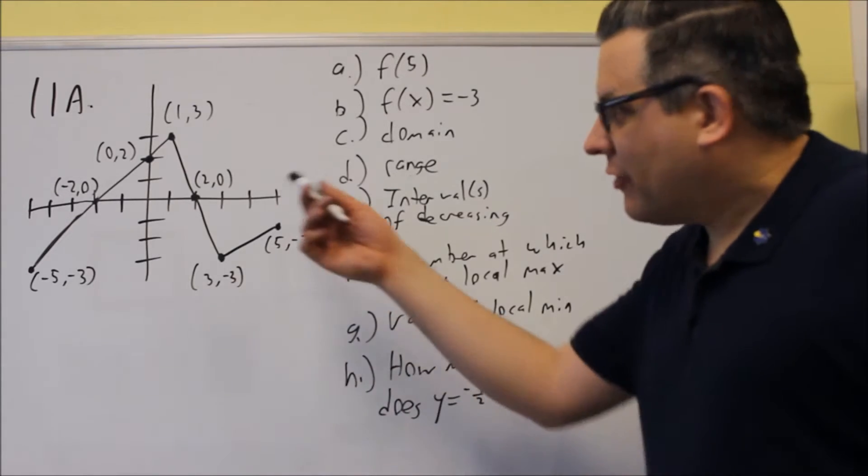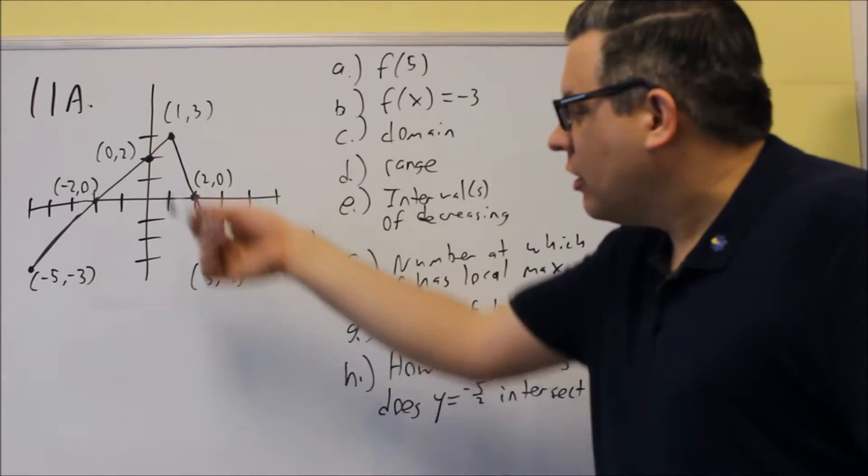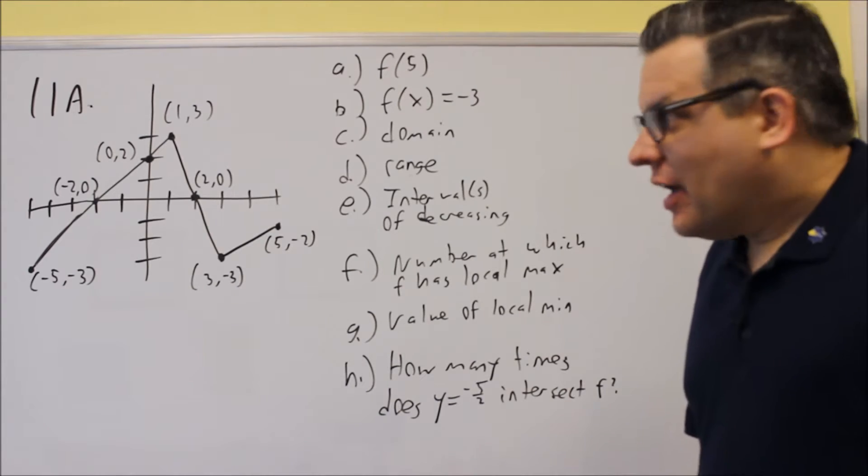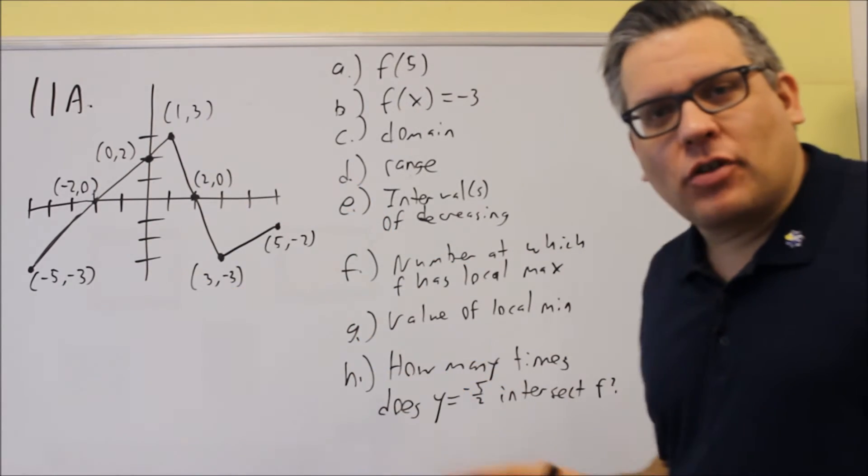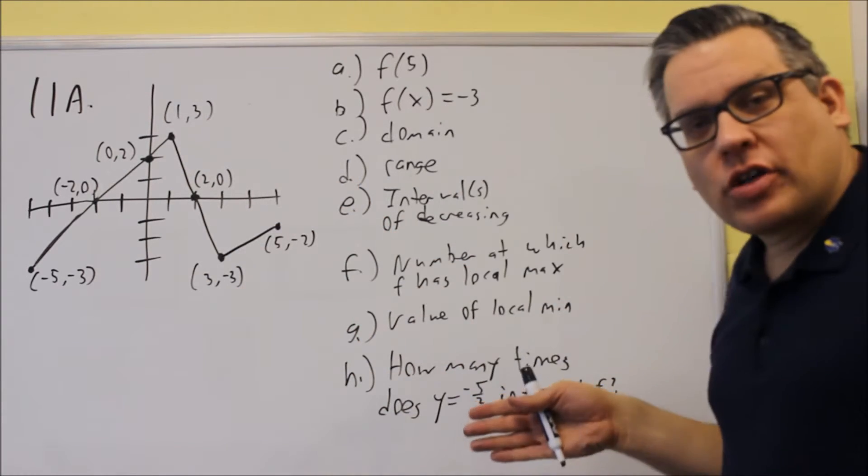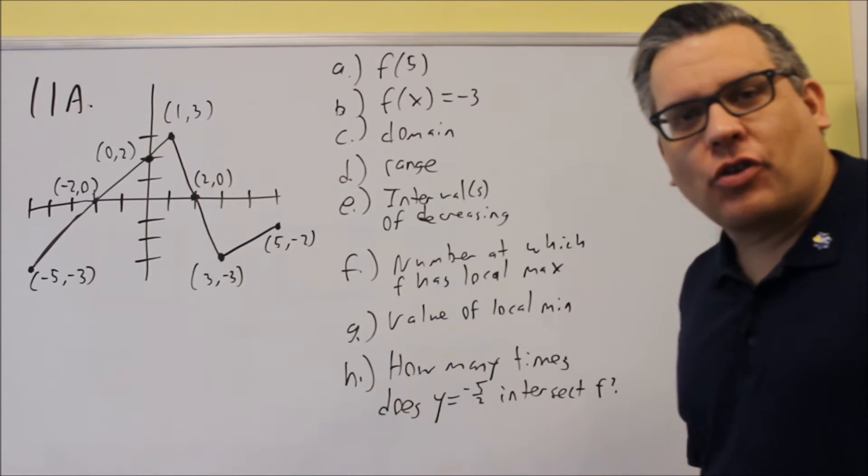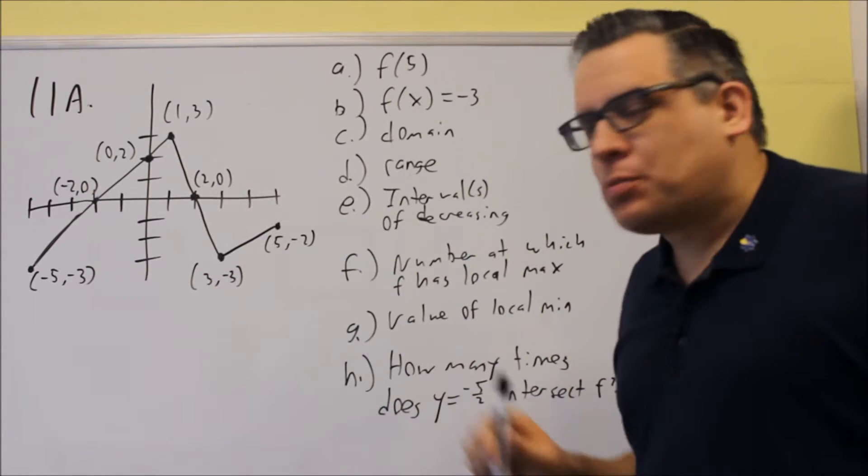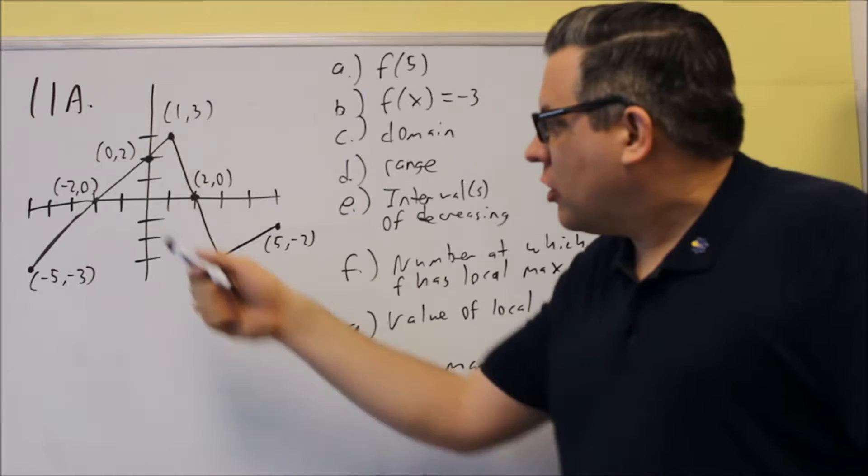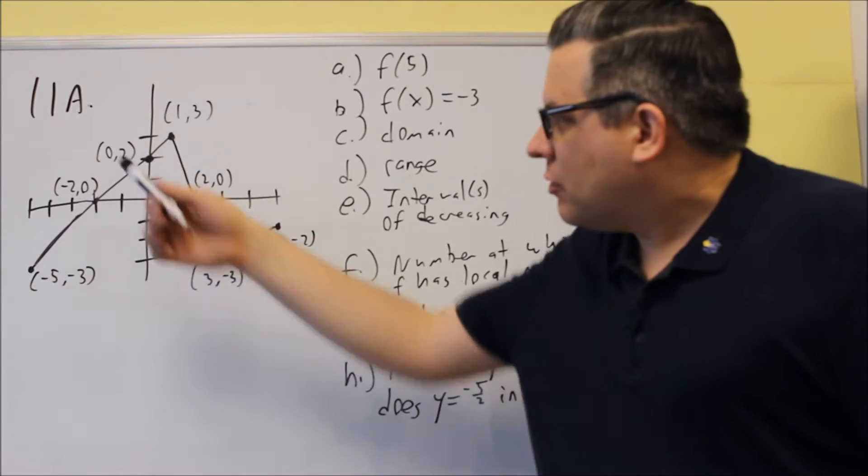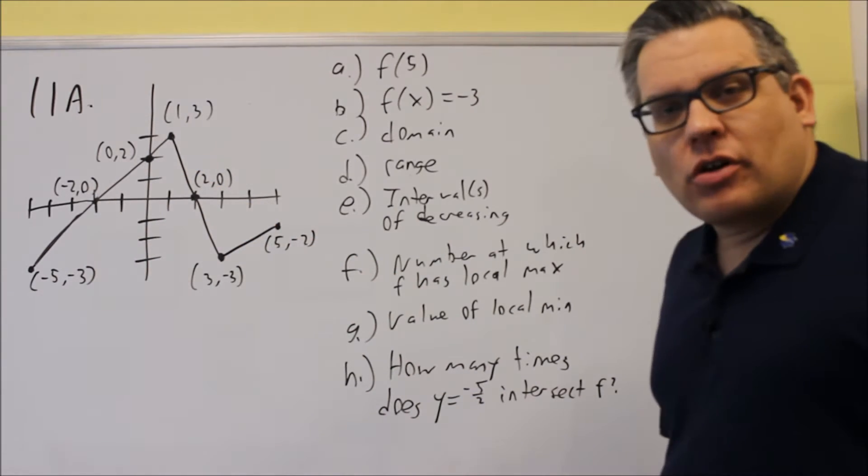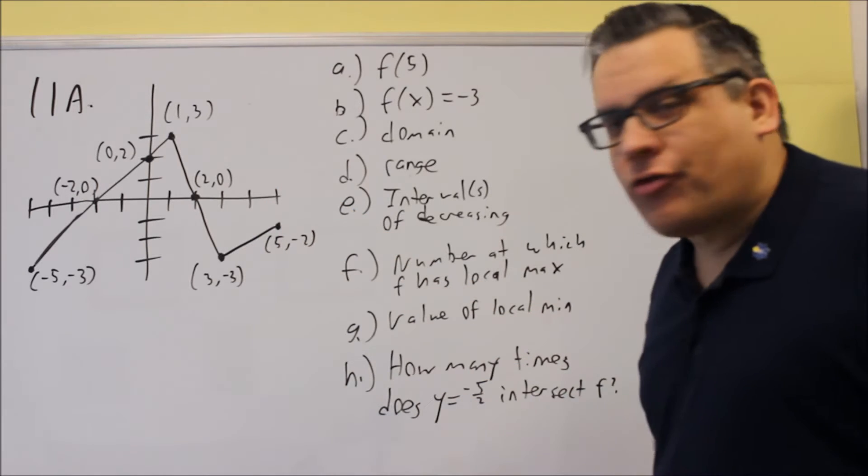For number 11, 11a and 11b, we're going to be given a graph, and so all this will be given to you, and they're going to ask you questions based off of the graph. So again, the graph will be provided, and this one we're going to use here. We have some values that are labeled there for us.